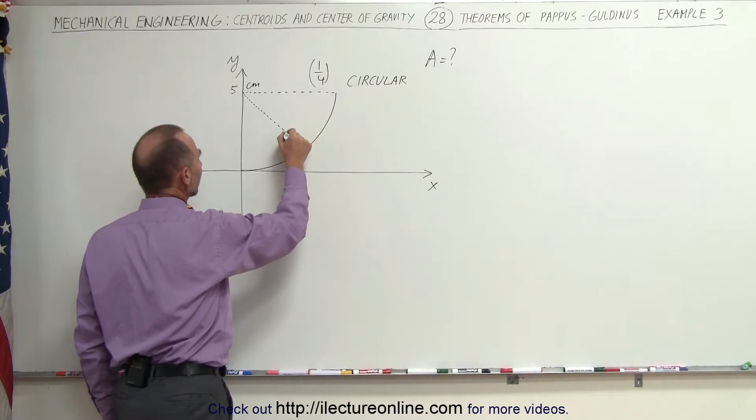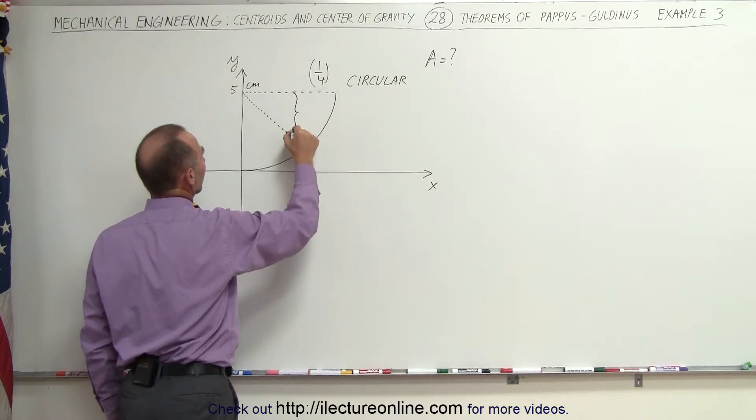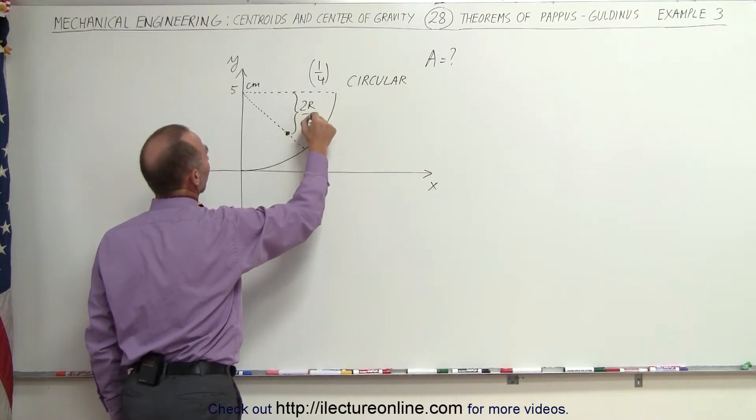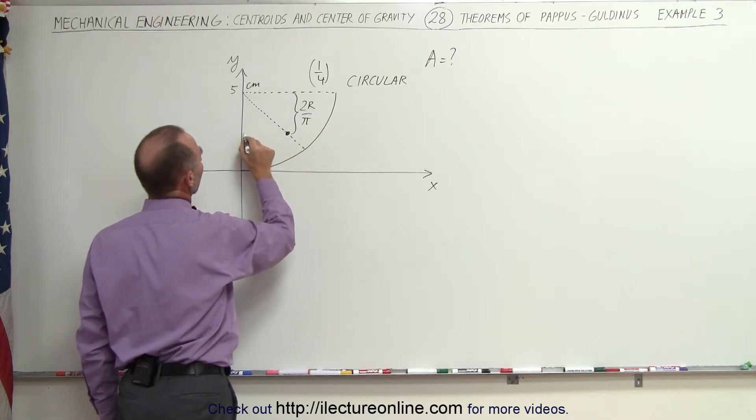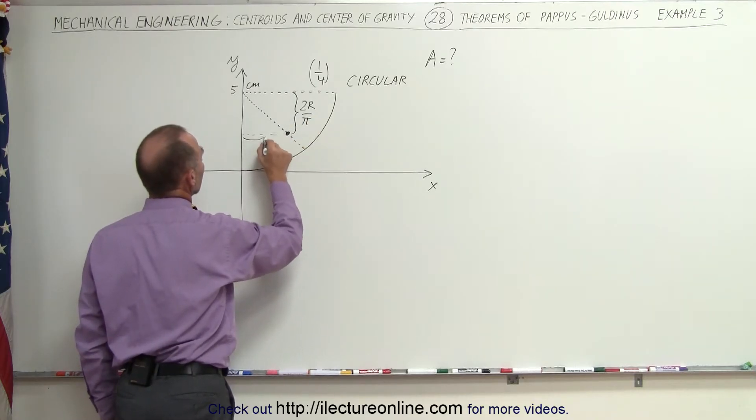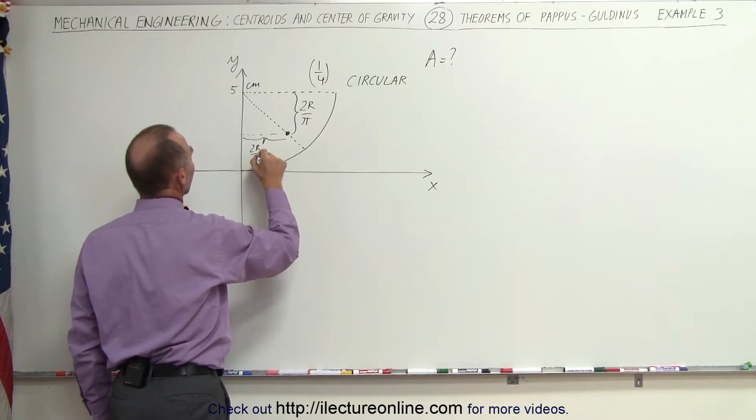The centroid will be somewhere over here and the distance from there to there will be equal to two times the radius divided by pi, and the distance from there to there will also be 2r divided by pi.